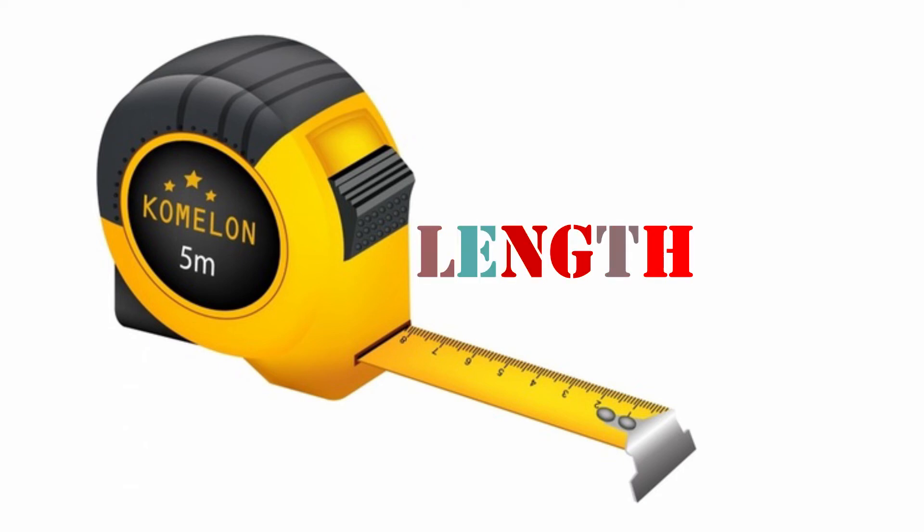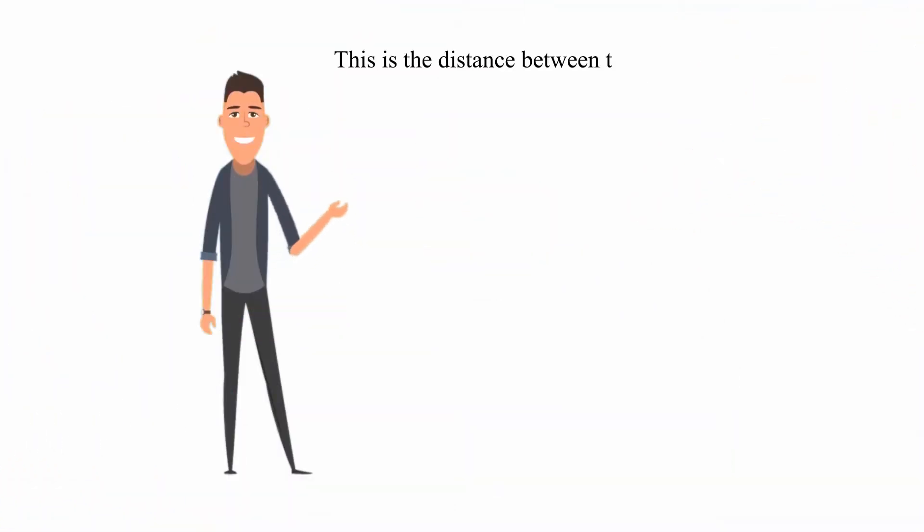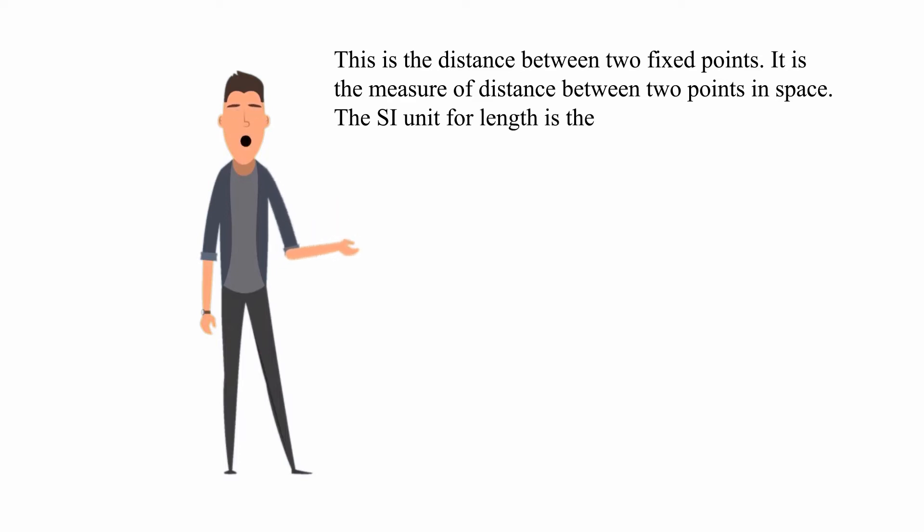Length is the distance between two fixed points. It is the measure of distance between two points in space. The SI unit for length is the meter, m.